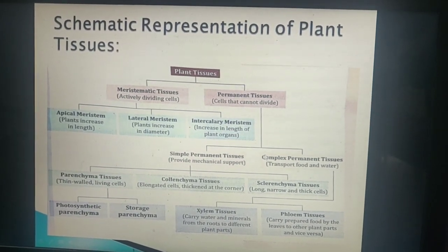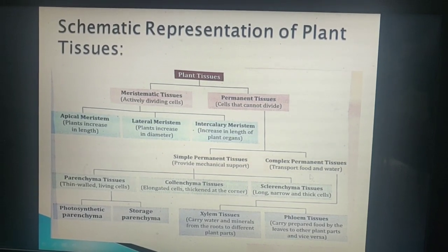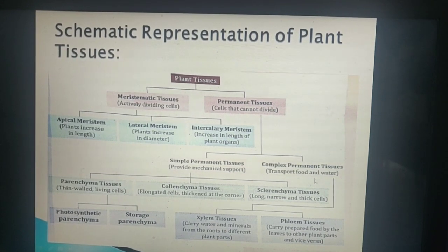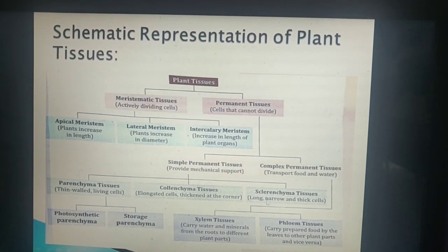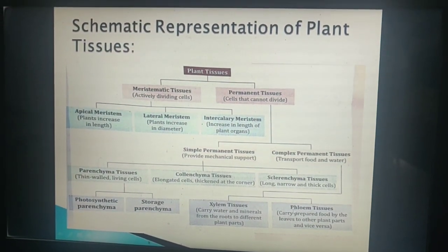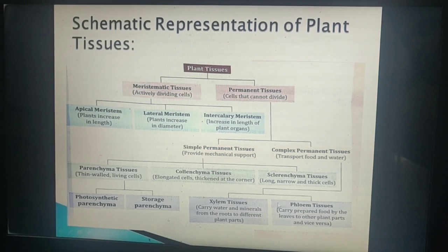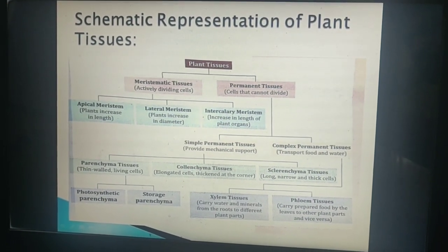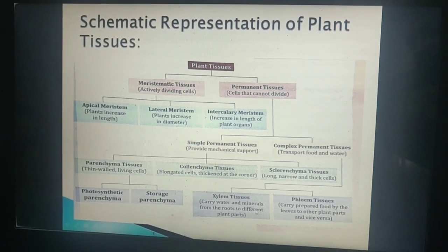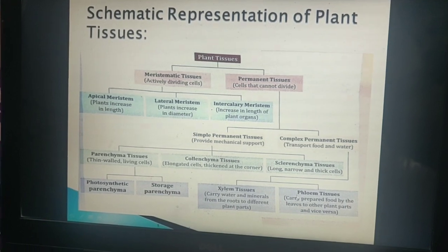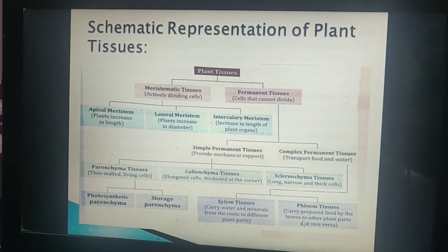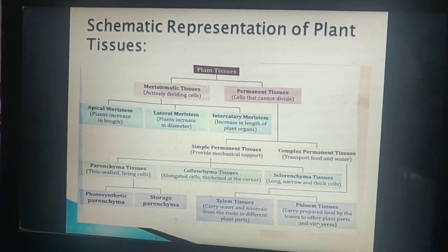Today we will read about the complex permanent tissues. The complex permanent tissues are mainly responsible for transport of food and water. These are of two types: xylem and phloem tissue. Xylem and phloem together are called vascular bundles. Xylem is a vascular tissue which carries water and minerals from the roots to different parts of the plant. Phloem tissue carries prepared food from the leaves to other plant parts and vice versa.